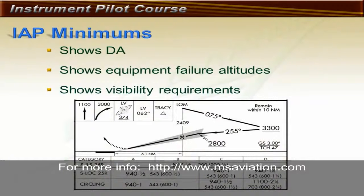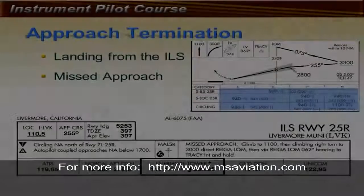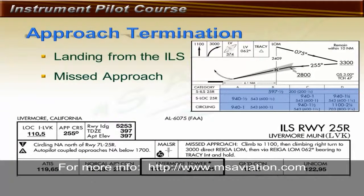The minimums section of the ILS appears at the bottom of the chart. It includes the normal decision altitude and required in-flight visibility, and identifies new minimums in the event of an outage of the glide slope, marker beacon, approach lighting system, or other equipment. In addition to statute miles, visibility can also be shown as runway visual range, or RVR. Upon arrival at the decision altitude, the pilot will either land or execute the missed approach. To descend below the decision altitude, the pilot must have a portion of the runway environment in sight and be in a position from which a normal landing can be made using normal maneuvers.